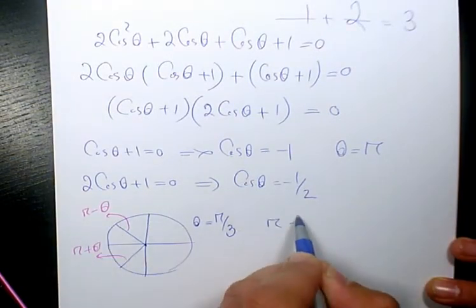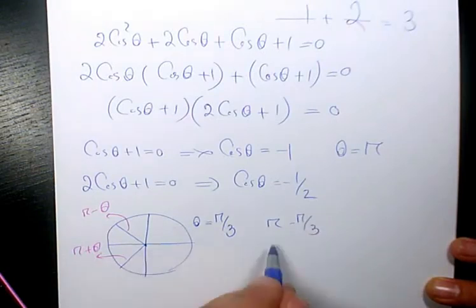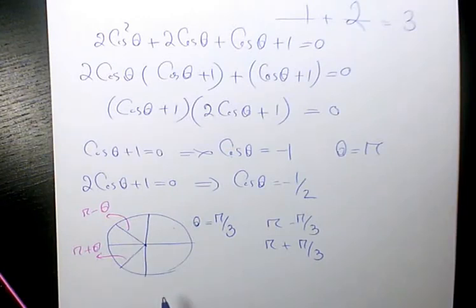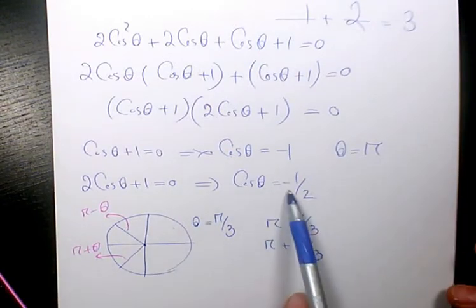So, the answer is going to be pi minus pi over 3, and pi plus pi over 3. Why? Because cosine has to be negative 1 over 2, not positive, negative 1 over 2.